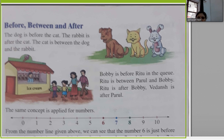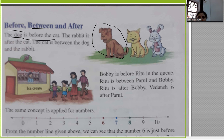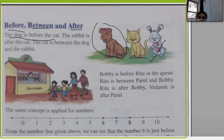Now we will study before, between, and after. 'Before' means the one that comes first; 'between' is the number in the middle of two numbers; 'after' is the number that comes next. The dog is before the cat; the cat is between the dog and the rabbit; the rabbit is after. Bobby is before Ritu in the queue. Ritu is between Parul and Bobby. Vedansh is after Parul.